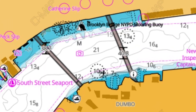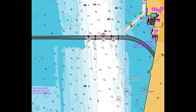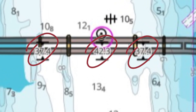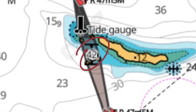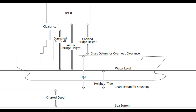Bridge height is marked on nautical charts, both paper and electronic. Heights are given in meters or feet; the unit of heights is shown in the chart title block. On electronic chart display, the unit of heights is meters. The charted bridge height represents the distance from the bridge's underside to a specific water level reference point, known as the chart datum for overhead clearance heights.